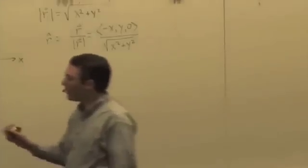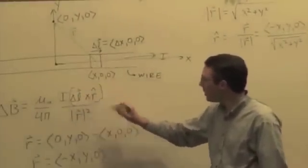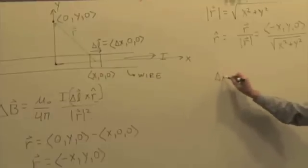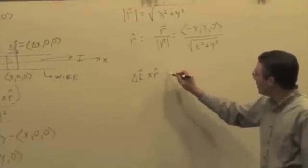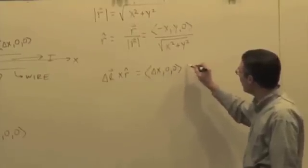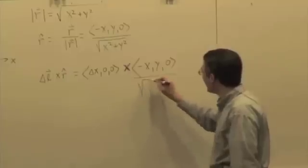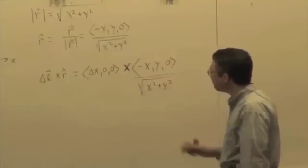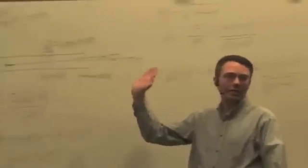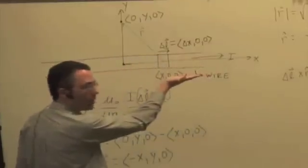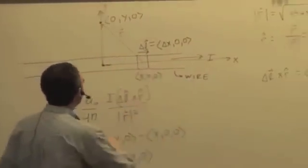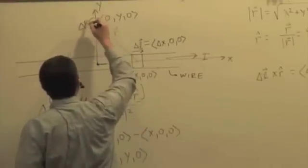We need to do the cross product here. So we found r hat and we found r. Now we want to think about this cross product, delta L cross r hat. So we have delta L cross r hat is going to be delta x, 0, 0, crossed with negative x, y, 0, divided by this magnitude. And already we know, what's the direction going to be? Before we even work this out, the direction is going to be what? Out of the board, right hand rule. Fingers in the direction of delta L, curl them towards r hat, thumb points out. So we know that we're just going to get a z component and that delta B is pointing out.